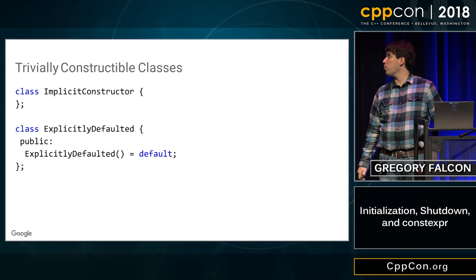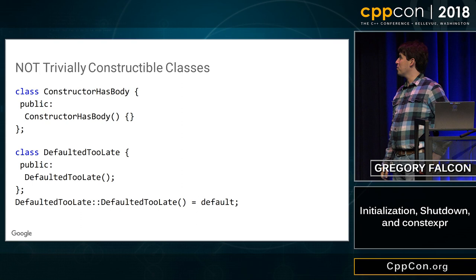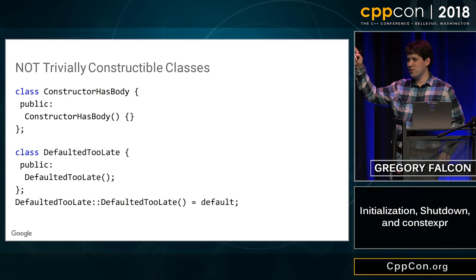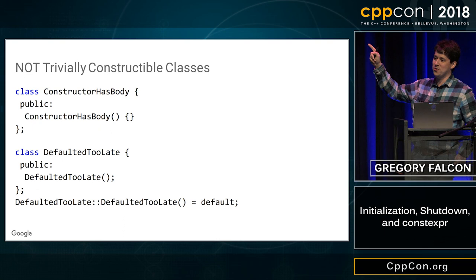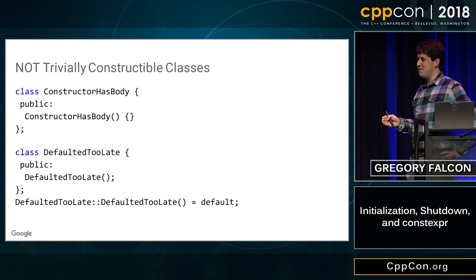Some ways you can go wrong: here I've got a constructor whose body is just open curly brace, close curly brace — that is a user-provided constructor. This class whose constructor does nothing is not trivially constructable. Please get out of the habit of writing this in your constructors and destructors, because you're making initialization and teardown of your objects more complicated than it needs to be. You really want to write '= default', or even better, just don't write it. If you're happy with the default constructor, that's why it's the default constructor.